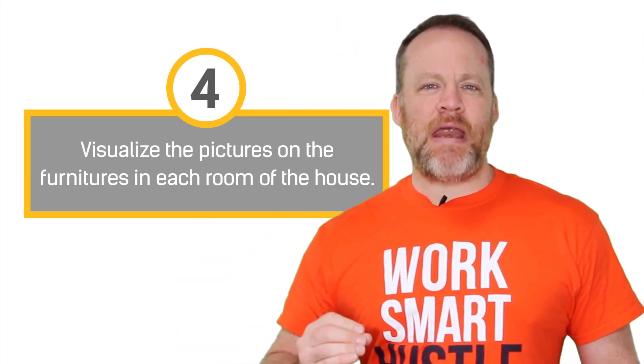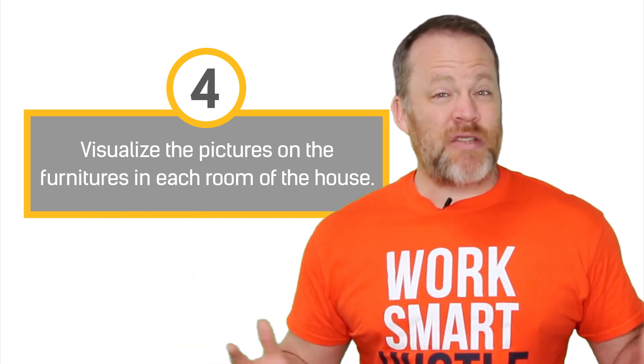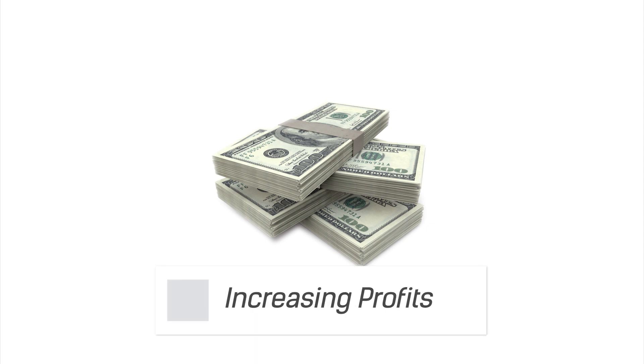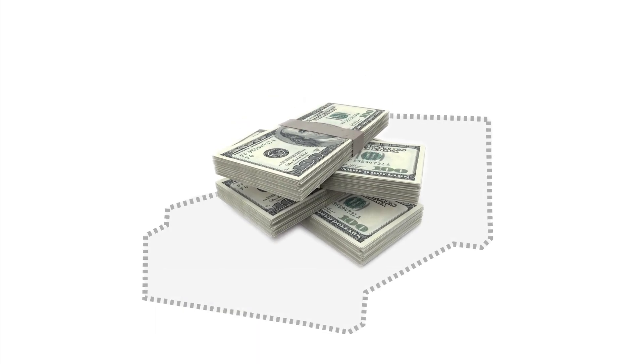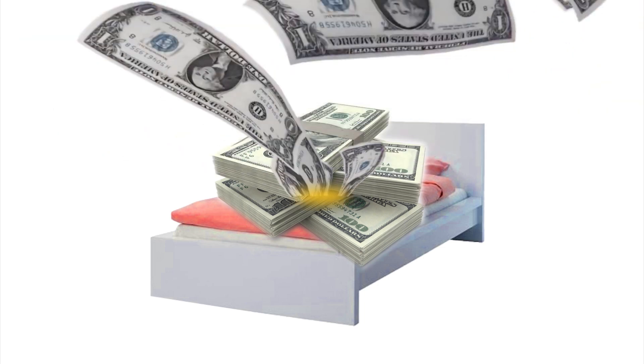Step number four — this is where it gets fun. You take the pictures that you've created and you just visualize them around the room. If you have ten points, you're going to need ten pieces of furniture; fifteen points, fifteen pieces of furniture. In this scenario we have five points. We take the first thing we want to talk about — lots of money to remind us of increasing profits — and visualize that on your first piece of furniture. So if the first piece of furniture is a bed, imagine money flying out of that bed.